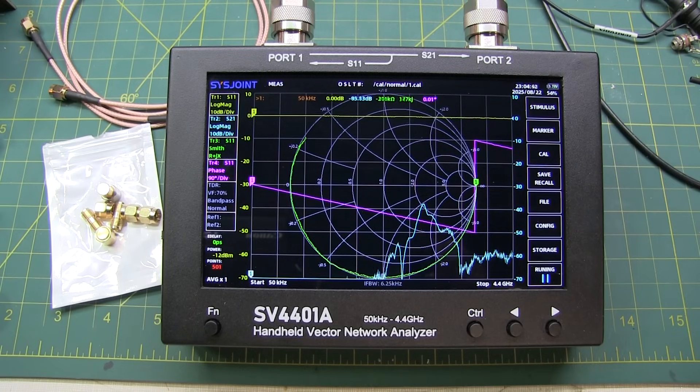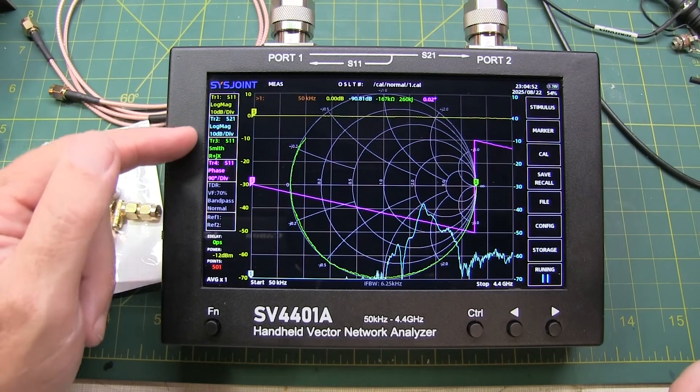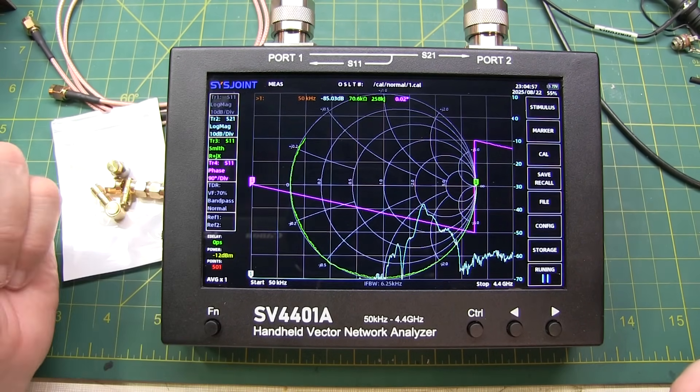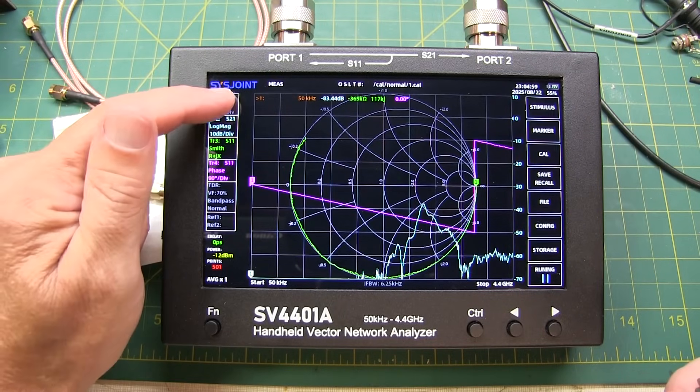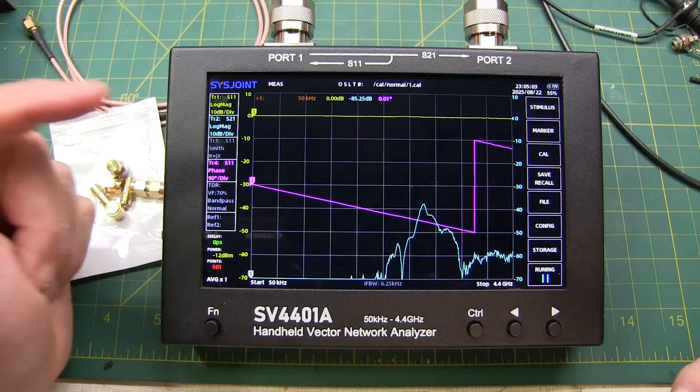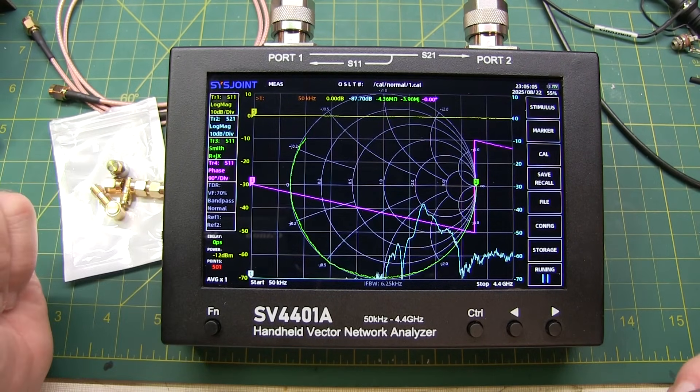For example, the traces are all on the menu on the left hand side here. And simply touching one of the trace badges makes that trace go away. Touching it again brings it back on. If I touch the Smith chart one, the Smith chart goes away. Touching it again comes back on.